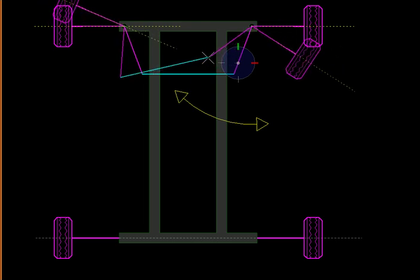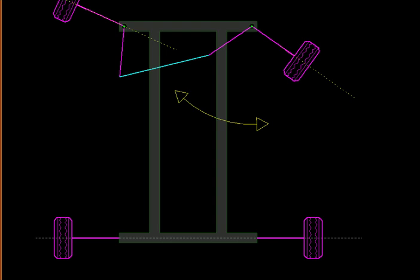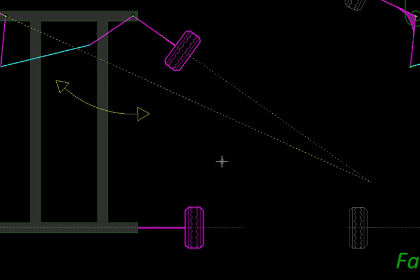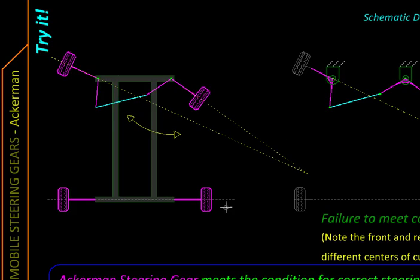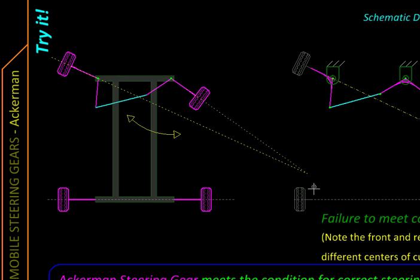The two wheels turn again through unequal angles, like before. If we find their point of intersection, this time we notice that it is not intersecting on the rear axle. So these two front wheels are turning about one point, while the rear wheels are turning about an axis which is not coincident with that point.